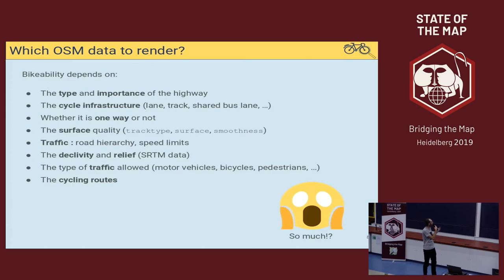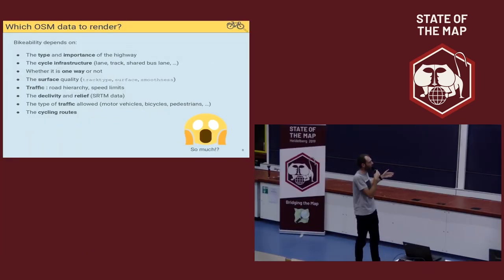We wanted to show how much traffic there is on different roads. We don't have much data for that, so we use the road hierarchy and speed limits. For declivity and relief, we use SRTM data from a NASA mission. For the type of traffic allowed, we use the highway tag with pedestrian and driving streets, and also the access tag. The last thing to render was cycling routes.